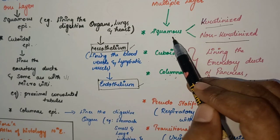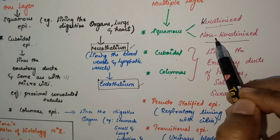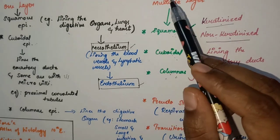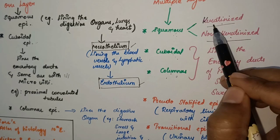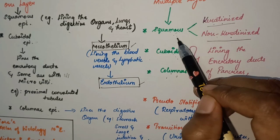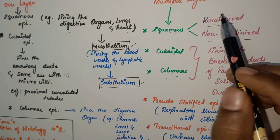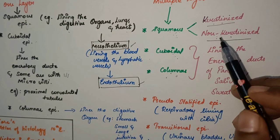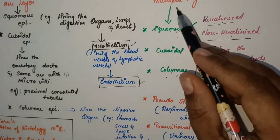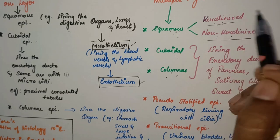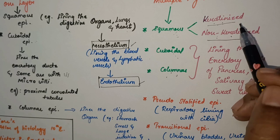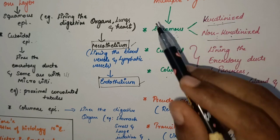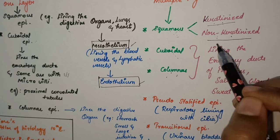Under stratified squamous epithelium, you have two subdivisions: keratinized and non-keratinized. The full terms are stratified squamous keratinized epithelium and stratified squamous non-keratinized epithelium. Specifically in the oral cavity, keratinized epithelium is seen in the hard palate and the gingiva — the most common locations.